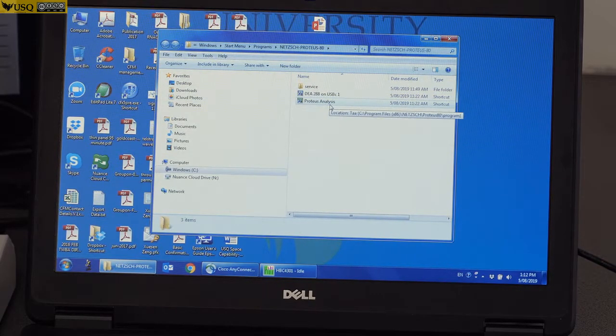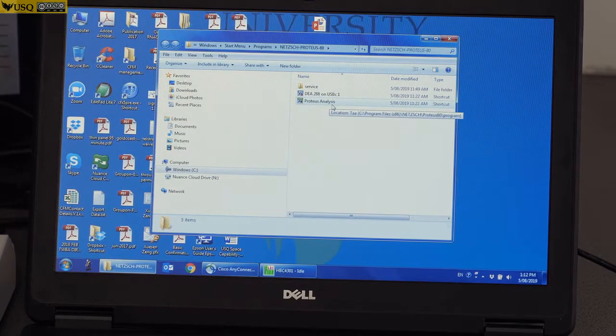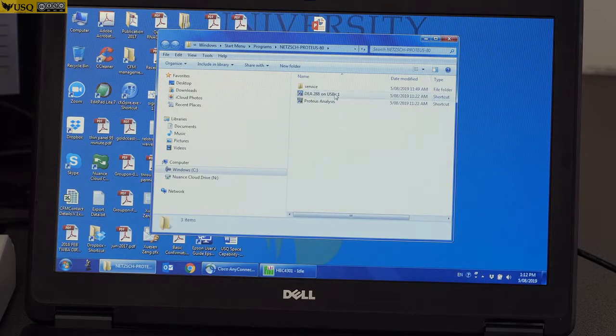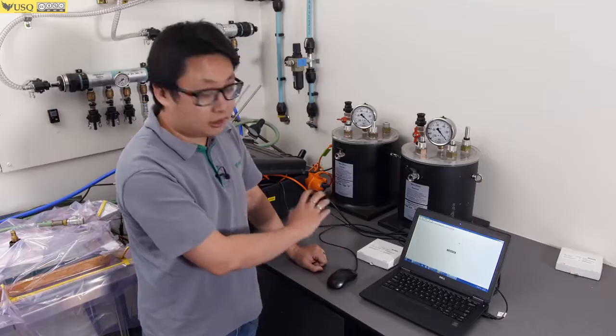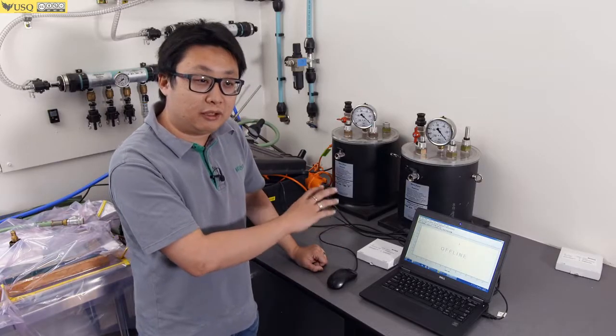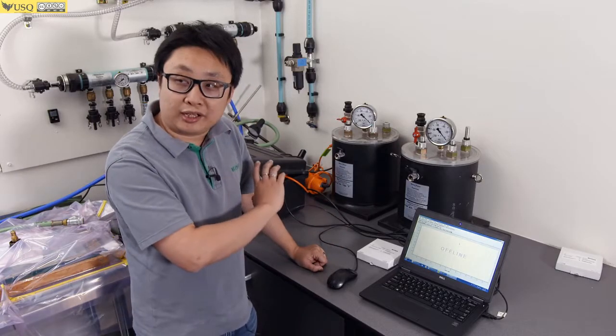The first icon is the measurement program. The second icon, Proteus Analysis, is the analysis program. I will open up the first measurement program.